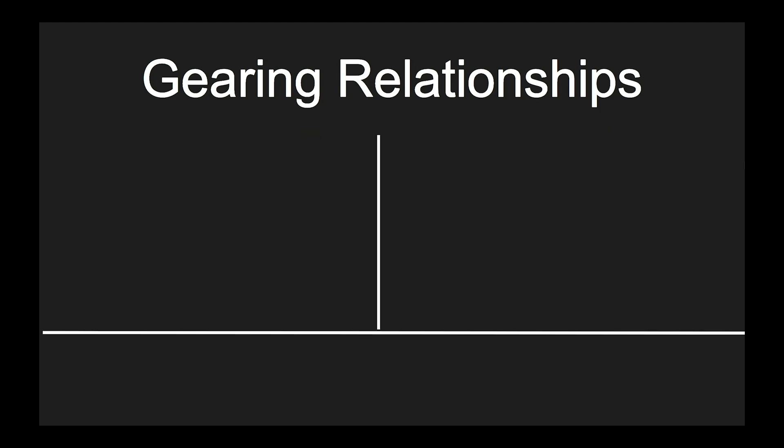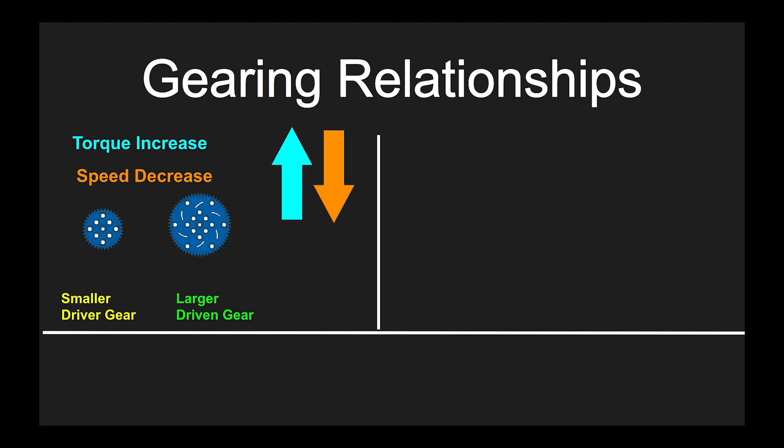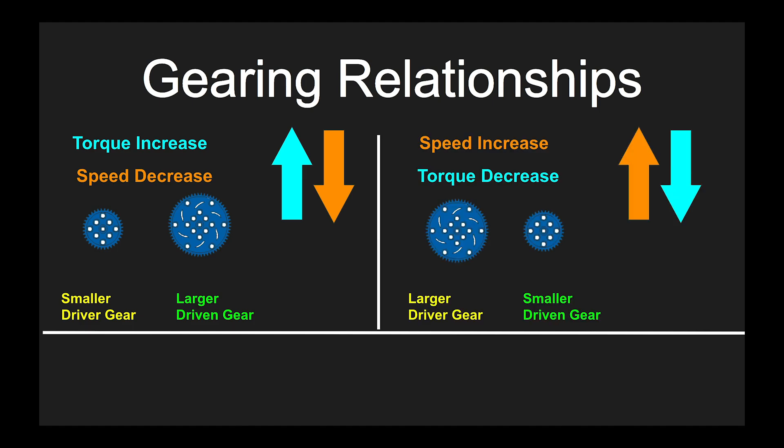Let's recap. If we want to have a torque increase and a speed decrease, then we need to use a smaller driver gear and a larger driven gear. If we want to have a speed increase but a torque decrease, then we use a larger driver gear and a smaller driven gear.